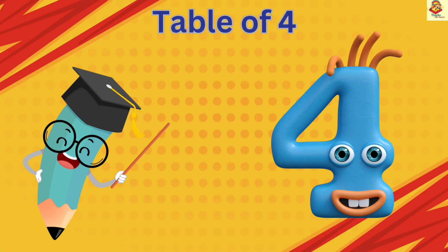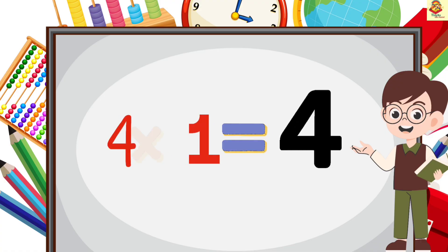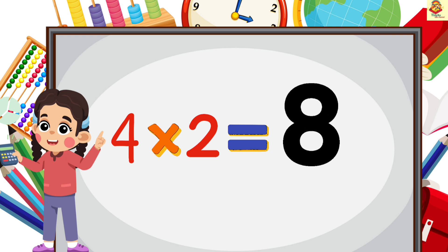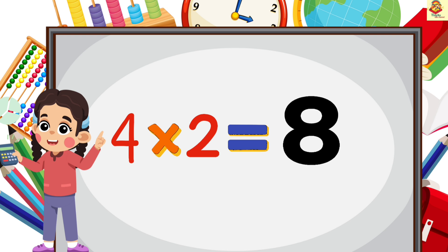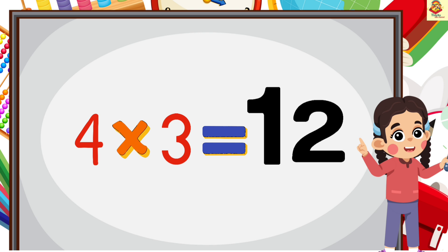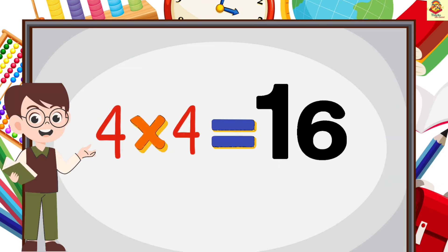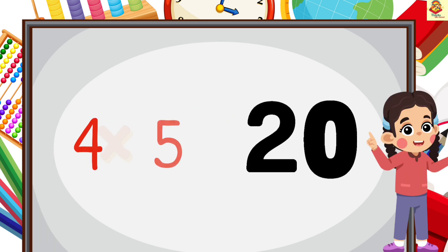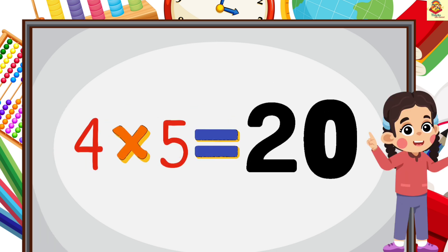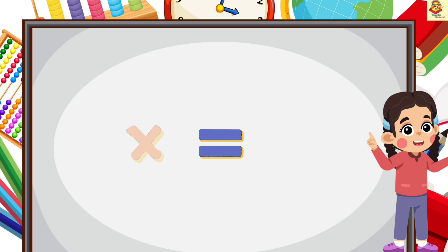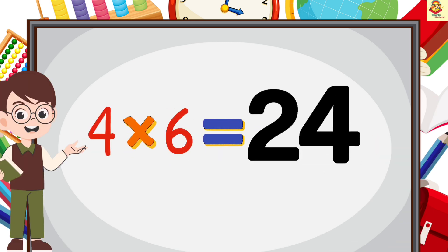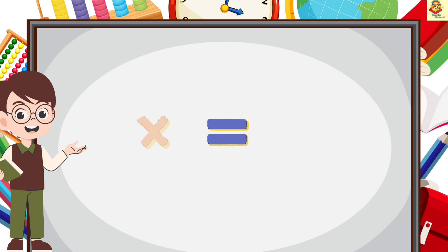Now kids, table of 4. 4 1's are 4, 4 4's are 16, 4 5's are 20, 4 6's are 24.